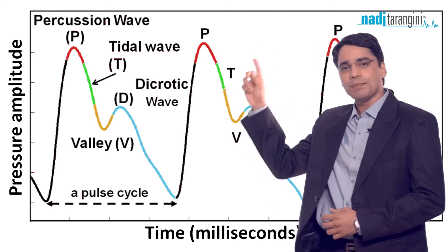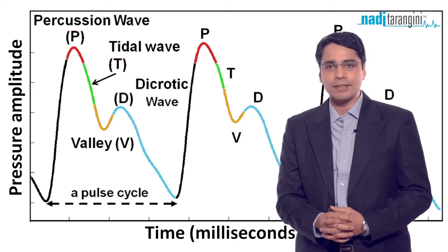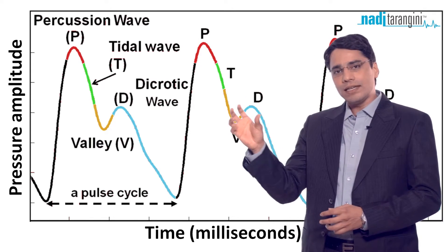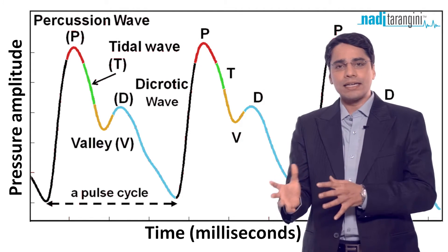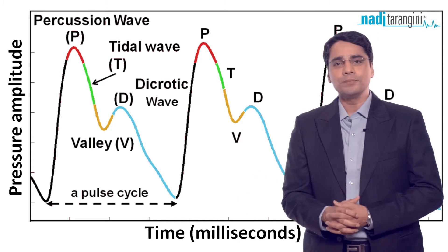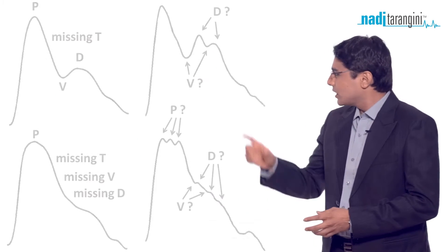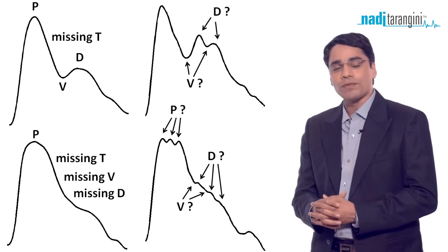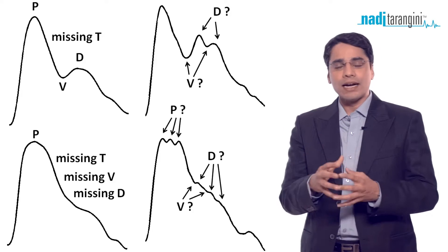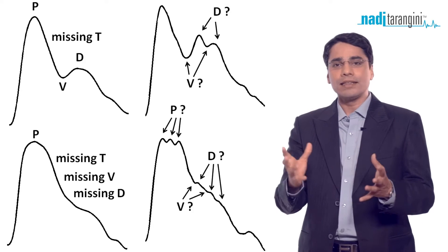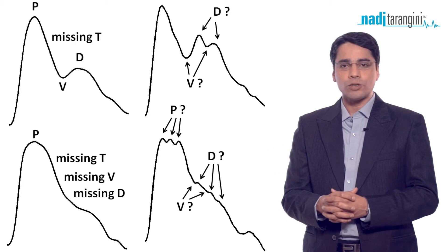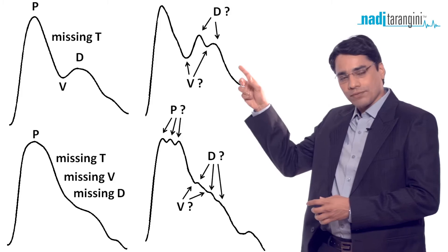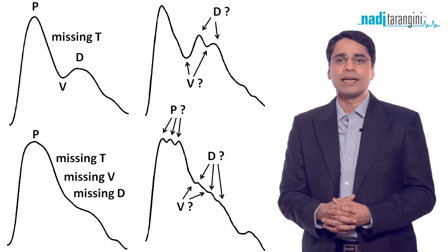P-T-V-D, P-T-V-D as the pulse signal. Vaidyas feel them as inter-variability and intra-variability to correlate with final outputs. These variations are very complex and sometimes difficult for a Vaidya to understand. That's why we've developed many pattern recognition and artificial intelligence algorithms in Nadi Tarangini to decode these variations and provide the final output.